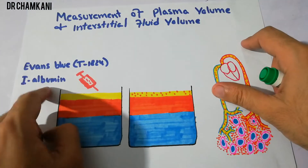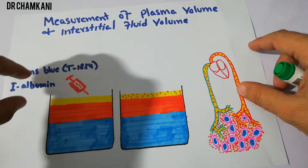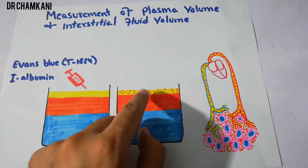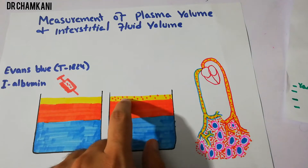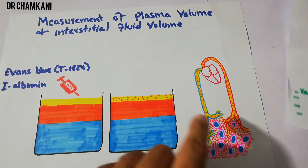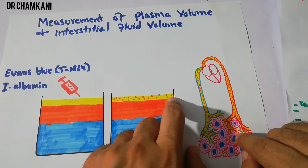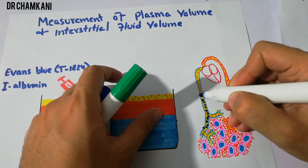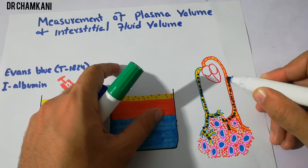Using radioactive iodine-labeled albumin or Evans blue, we can determine the plasma volume because these indicators will not cross out of the plasma. This indicator distributes only into the plasma and does not enter the interstitial fluid. As shown here, the indicator is present only in the plasma.